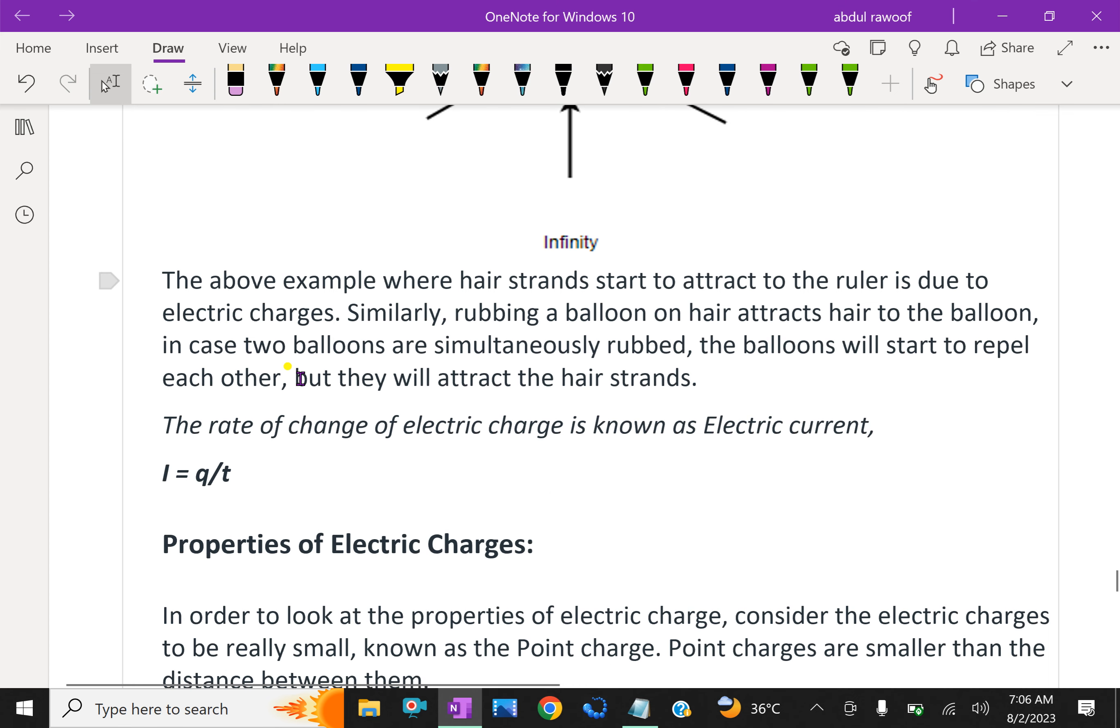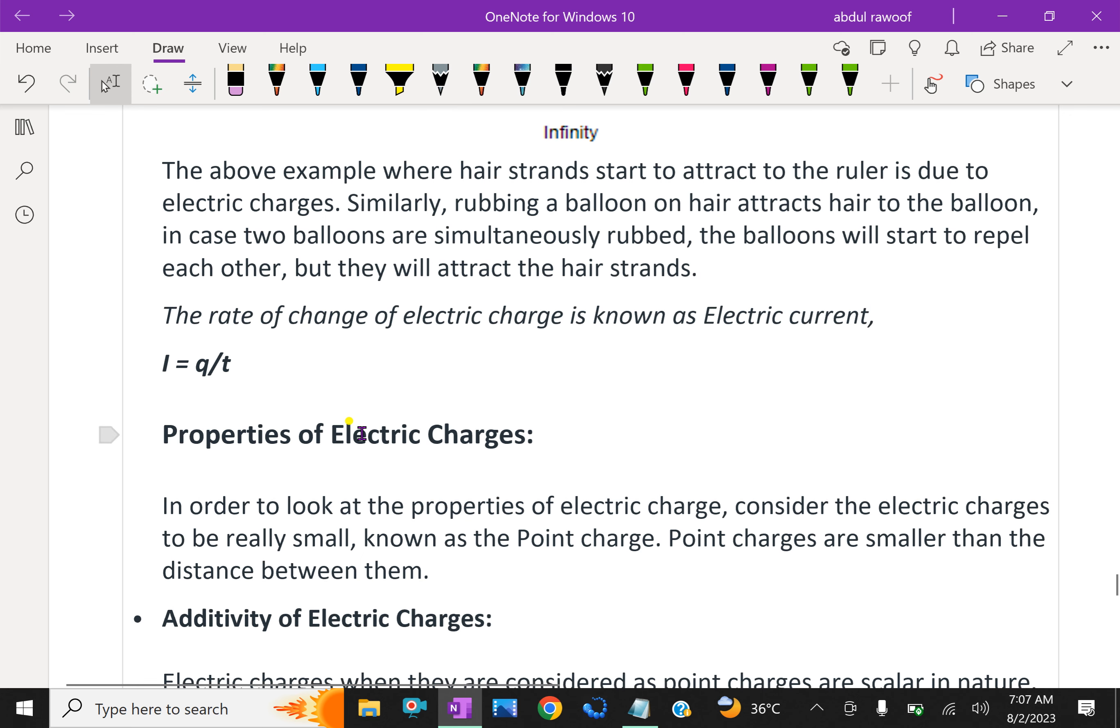The above example where hair strands start to attract to the ruler is due to the electric charges. Similarly, rubbing a balloon on hair attracts hair to the balloon. In case two balloons are simultaneously rubbed, the balloons will start to repel each other but they will attract hair strands. The rate of change of electric charge is known as electric current. Electric current is defined as charge per time, that is i = q/t.